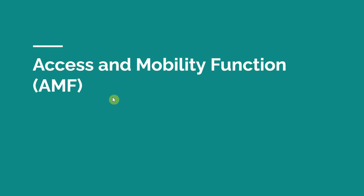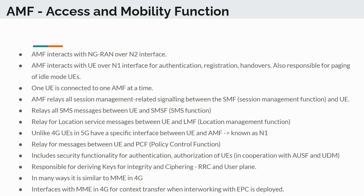Let us start off by talking about the AMF, or the Access and Mobility Function. This is one of the main network functions in the 5G core. AMF interacts with the NG-RAN, or your 5G RAN, over the N2 interface using the Next Generation Application Protocol (NGAP). The AMF also interacts with UEs over the N1 interface for authentication, registration, handovers, and is responsible for paging of idle mode UEs.